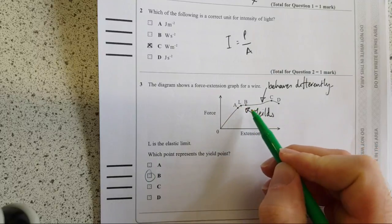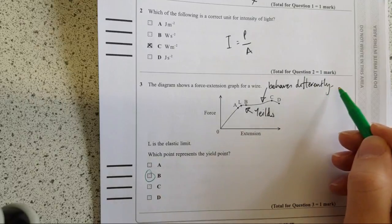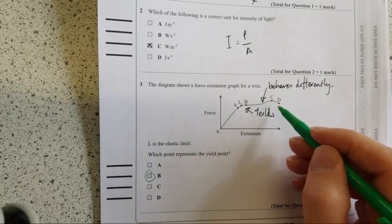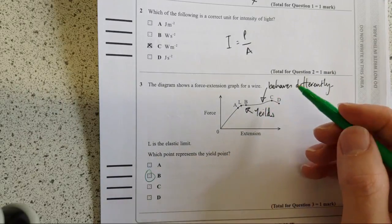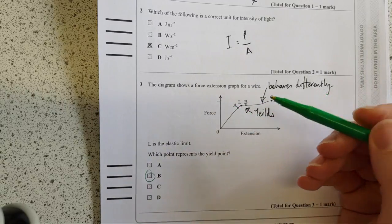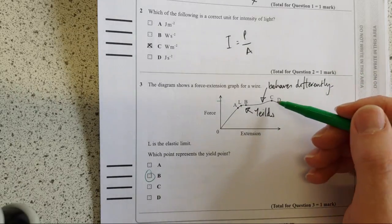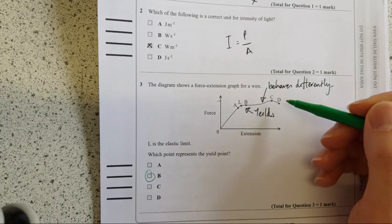Essentially it yields to a different material and it behaves differently. So at this point it behaves in a different way so we've said the material has yielded. So that's B there. C would be the ultimate tensile force or the compressive force if it was compressive. It is essentially C is the strength of the material. D is the breaking point.